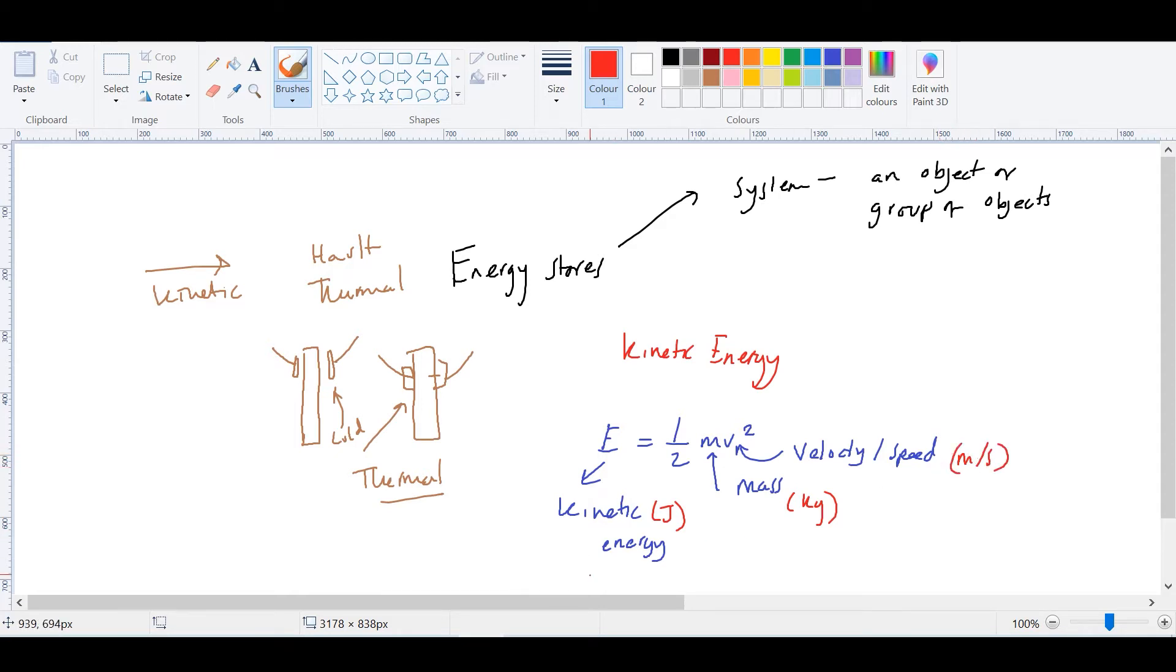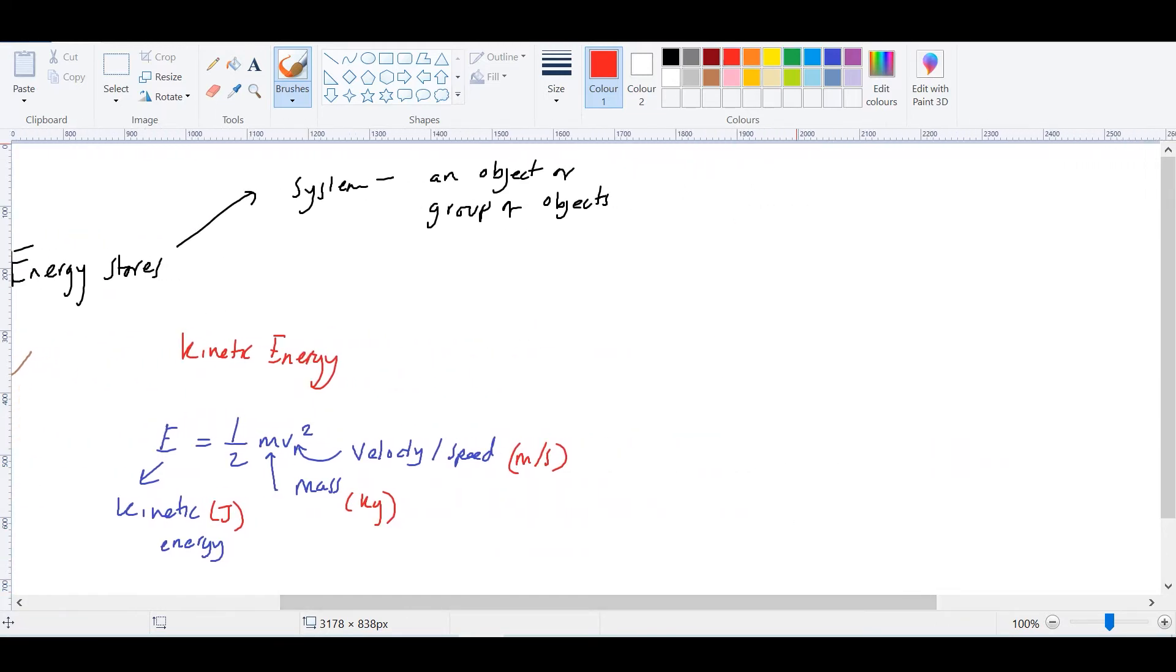So there's two ways you could be asked about calculations pertaining to this formula. I'll give you two examples. So the first one is an object of mass 50 kilograms is traveling at a speed of 27 meters per second. And then you may be asked to work out the kinetic energy.